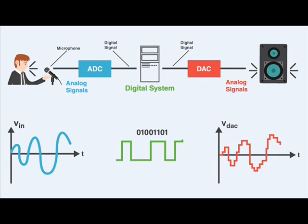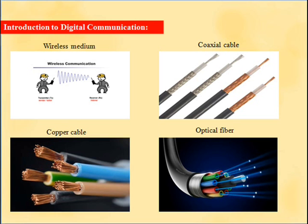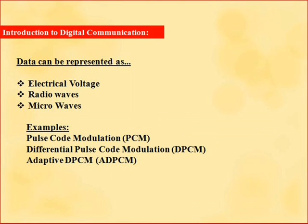Digital communication is the transfer of data over a point-to-point or even point-to-multipoint communication channel, examples of which are copper wires, optical fibers, and wireless communication media. The data is represented as an electromagnetic signal such as an electrical voltage, radio waves, or microwaves.